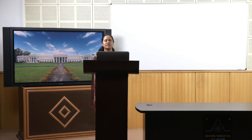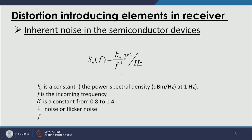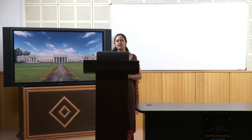First, inherent noise in semiconductor devices — the devices used in power amplifier design or any circuits including FPGAs have inherent noise. This is also known as 1/f noise or flicker noise. The noise as a function of frequency is proportional to a constant Kn, which is mostly the power spectral density taken at 1 Hz, multiplied by the square of the input voltage, and inversely proportional to frequency to the power beta.